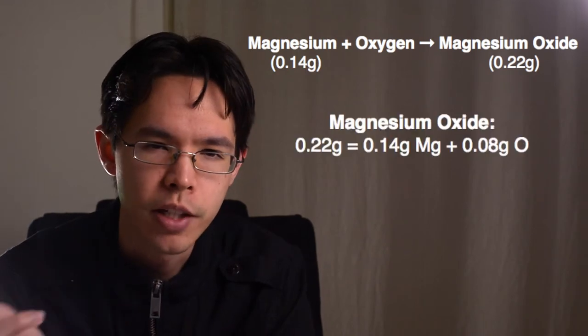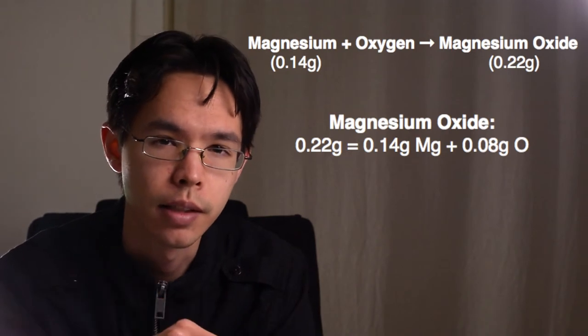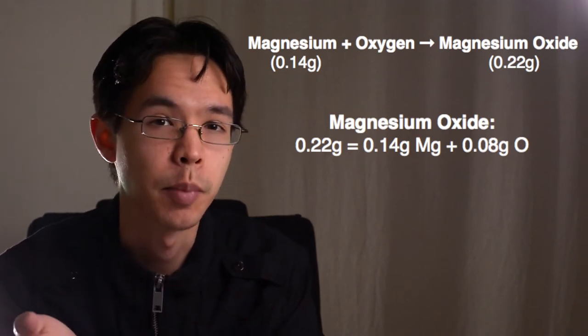So a quick subtraction between our product amount and our initial reactant amounts, we can find out how much oxygen there is by grams.